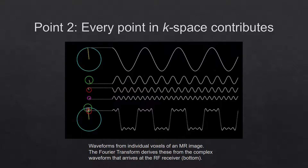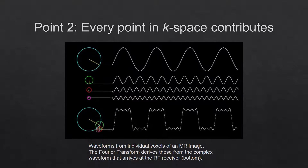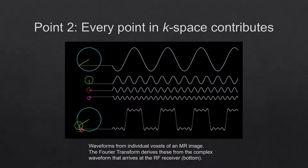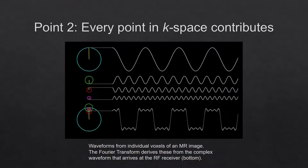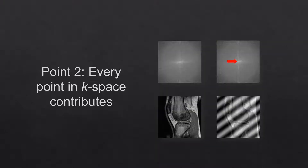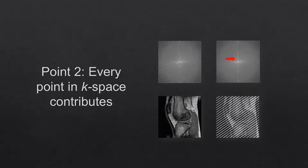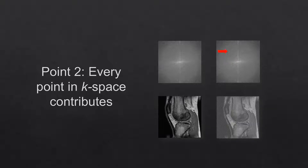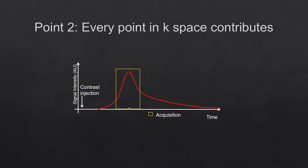A Fourier transform is a highly complex mathematical process which unpacks superimposed waveforms into their constituent parts. This has the effect that any artifact or error in k-space filling spreads the artifact across the entire image. More importantly, anything we change in that acquisition which reduces the sampling of k-space reduces the information available for generating the final image — that is to say, signal-to-noise.